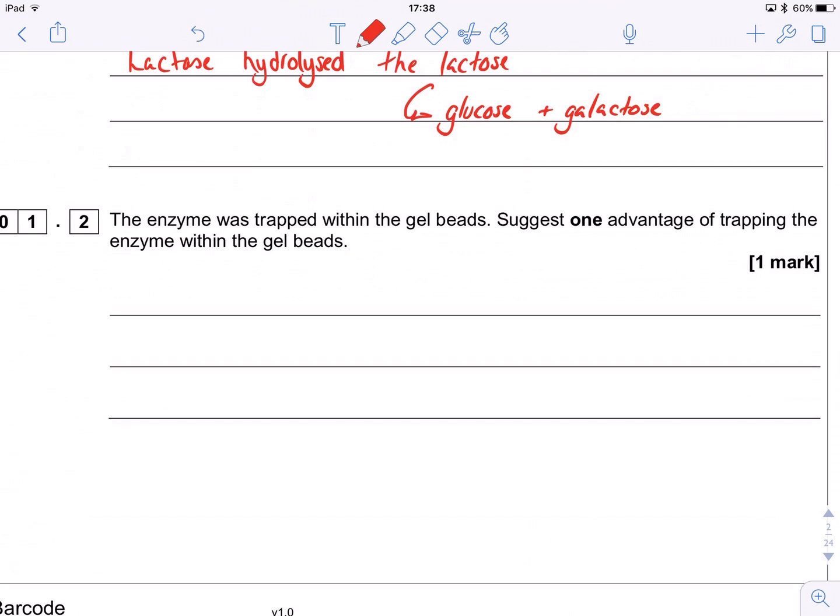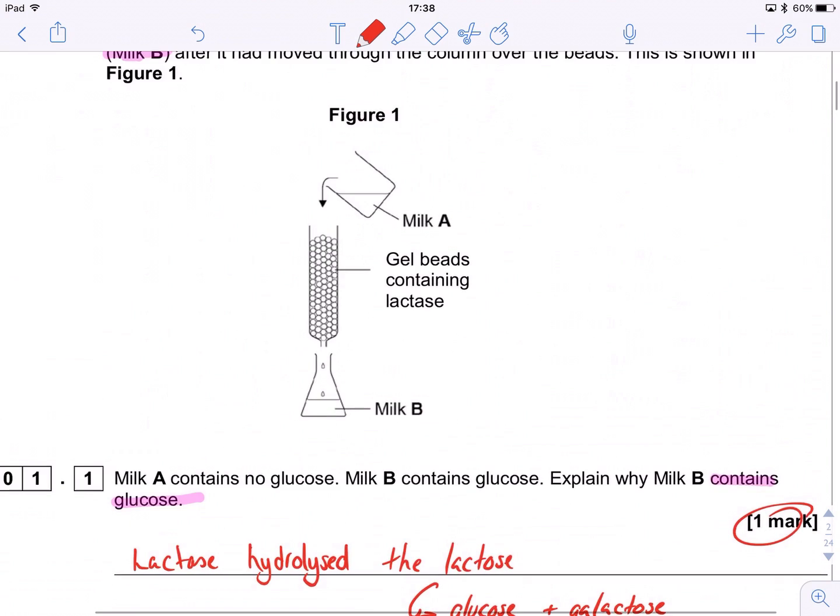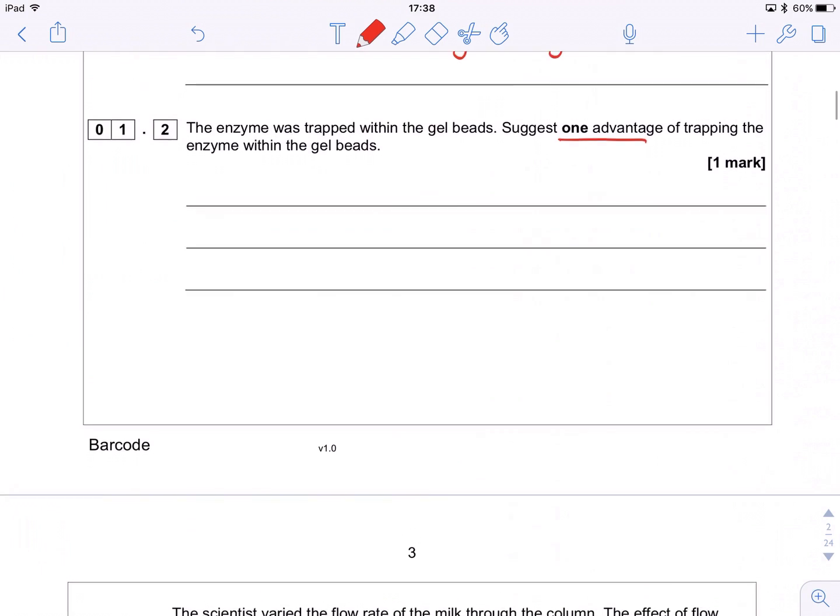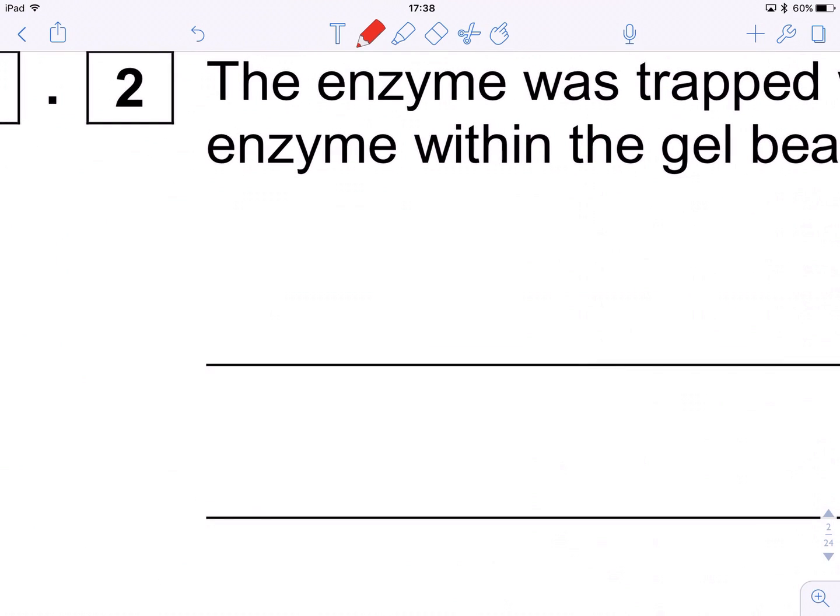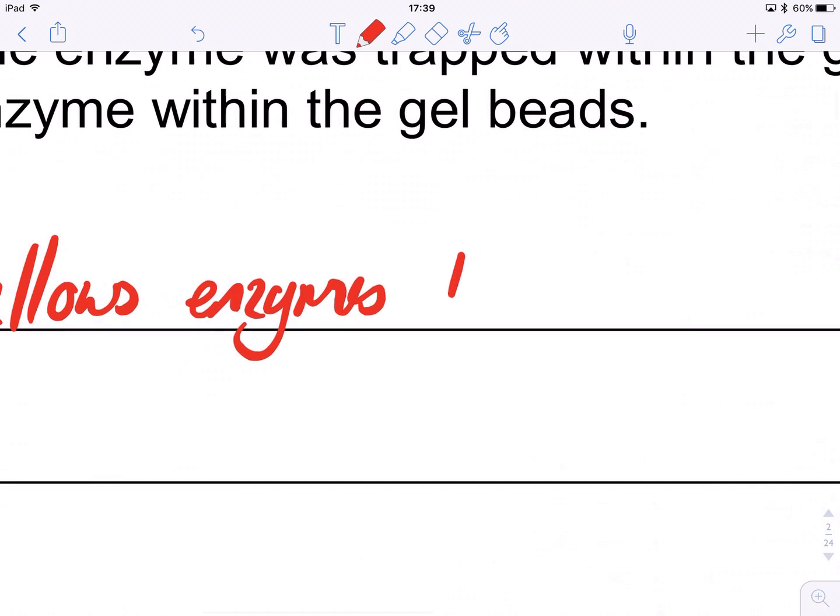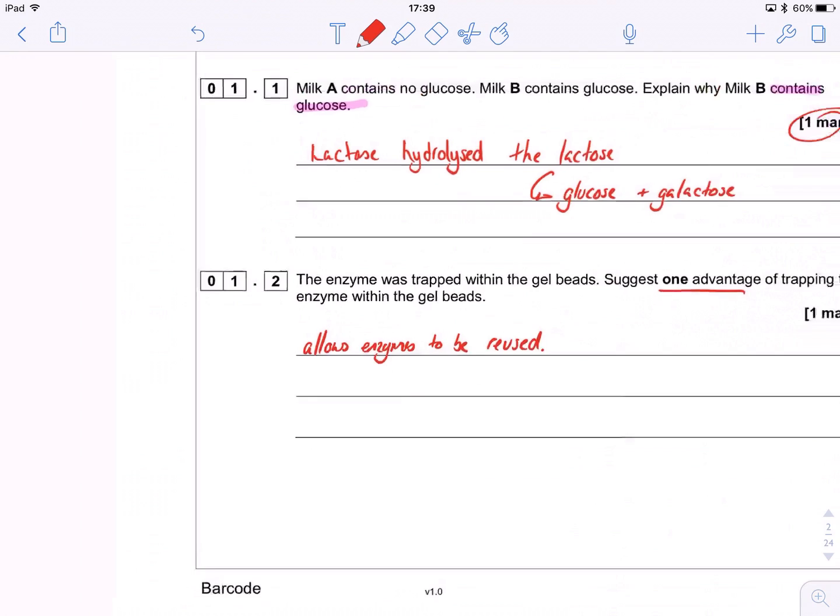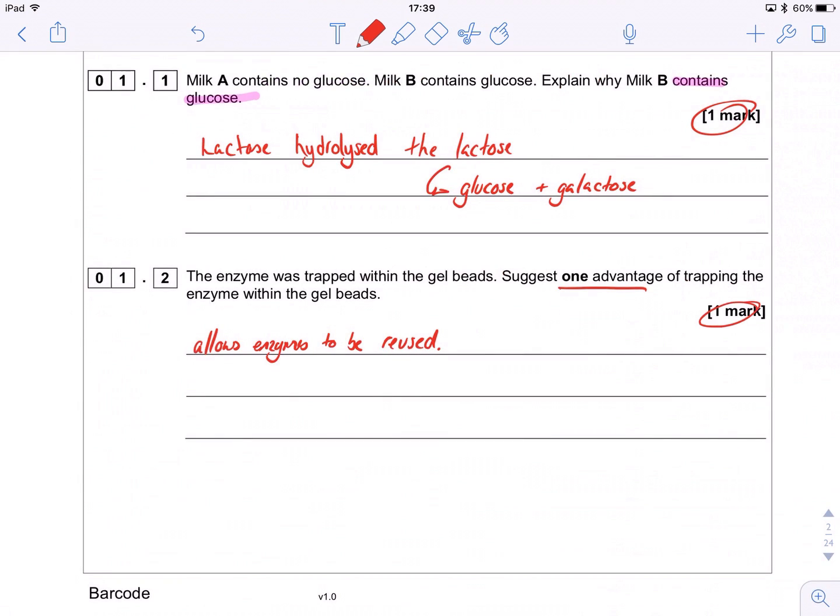So it says the enzyme was trapped within the gel bead. One advantage we're after here of trapping the enzyme. Well, realistically, you don't want to contaminate your product. So what you don't want is that your milk B down here, we don't want that to contain any enzyme. But I think the best one to go for is enzymes are great biological catalysts. They can be used time and time and time again. So if you keep them in that column, you can keep reusing them. So it allows enzymes to be reused. And you can run this whole thing as a continuous process rather than a batch process, which is great. Nice, one mark. Dead easy. Let's move on.